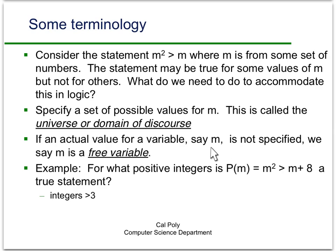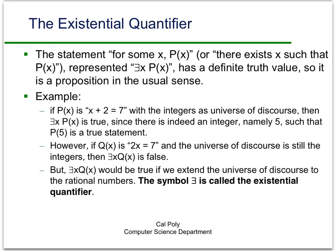When a variable in a propositional function is not assigned a specific value, we say it is a free variable. If the variable has a specific value assigned — say m equals 3 — then we say m is bound. For example: for what positive integers is P(m) true, where P(m) is m squared greater than m plus 8? The domain is the positive integers. It turns out this is true for integers greater than 3: plugging in 3 gives 9, which is not greater than 11, so it's false; plugging in 4 gives 16, which is greater than 12, so it's true for all integers greater than or equal to 4.